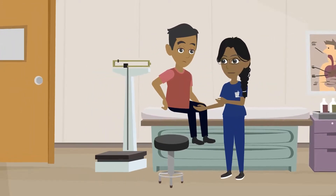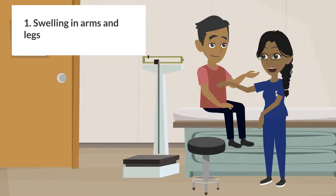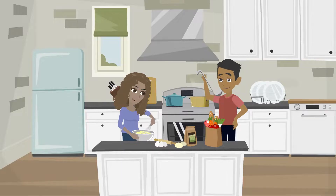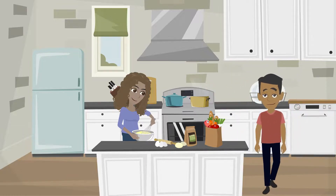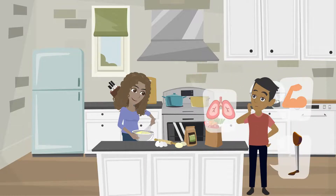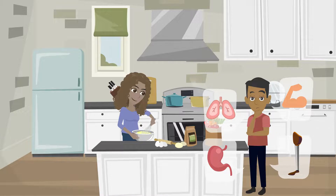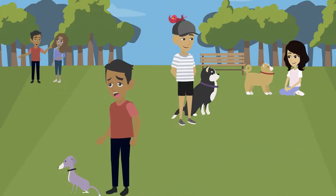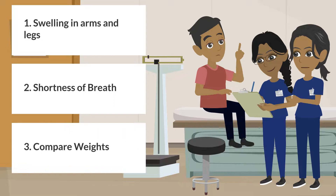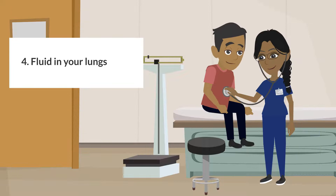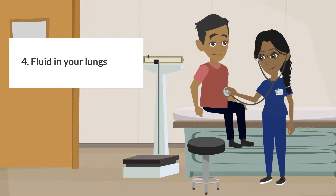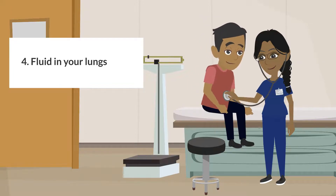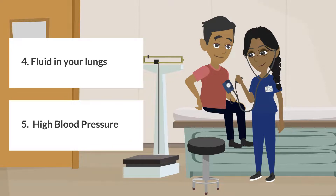First, your nurse will check for swelling in your arms and legs — all the fluid you eat and drink but don't urinate must go somewhere, so it goes to your arms, legs, lungs, and stomach. Next, your nurse will ask if you are having shortness of breath or difficulty breathing when performing daily activities such as walking your dog. Third, your medical team will compare your weights from before and after your last treatments. Fourth, your nurse will listen to your lungs to check for any fluid.